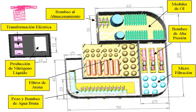Multiple-effect distillation works through a series of steps called effects. Incoming water is sprayed onto pipes which are then heated to generate steam. The steam is then used to heat the next batch of incoming sea water. To increase efficiency, the steam used to heat the sea water can be taken from nearby power plants. Although this method is the most thermodynamically efficient among methods powered by heat, a few limitations exist such as a maximum temperature and maximum number of effects.